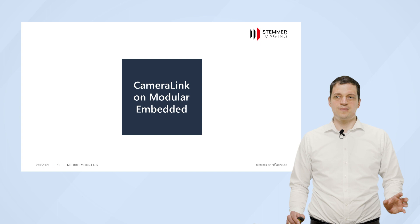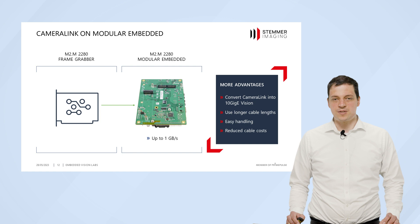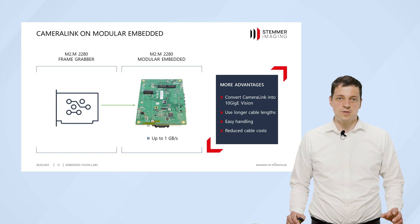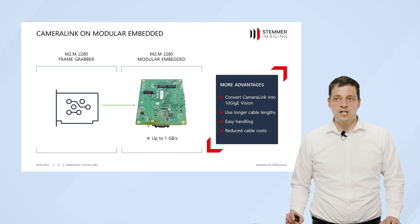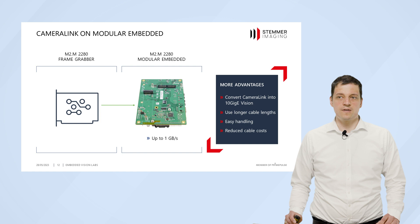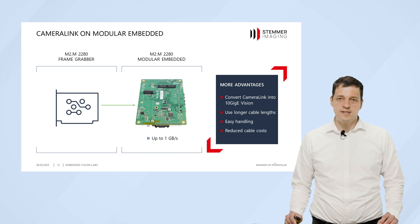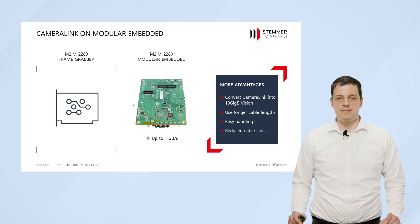This is actually a very easy setup. We have added an M2 interface to our Modular Embedded board to be more flexible. For example, as we have done now, you can add a frame grabber with an M2 interface to the board and therefore support CameraLink cameras. A good application for this is converting the CameraLink interface into a 10GigE interface — allowing longer cable lengths, using GigE Vision which is easier to work with than the old CameraLink standard, and achieving reduced cable costs by using shorter CameraLink cables.